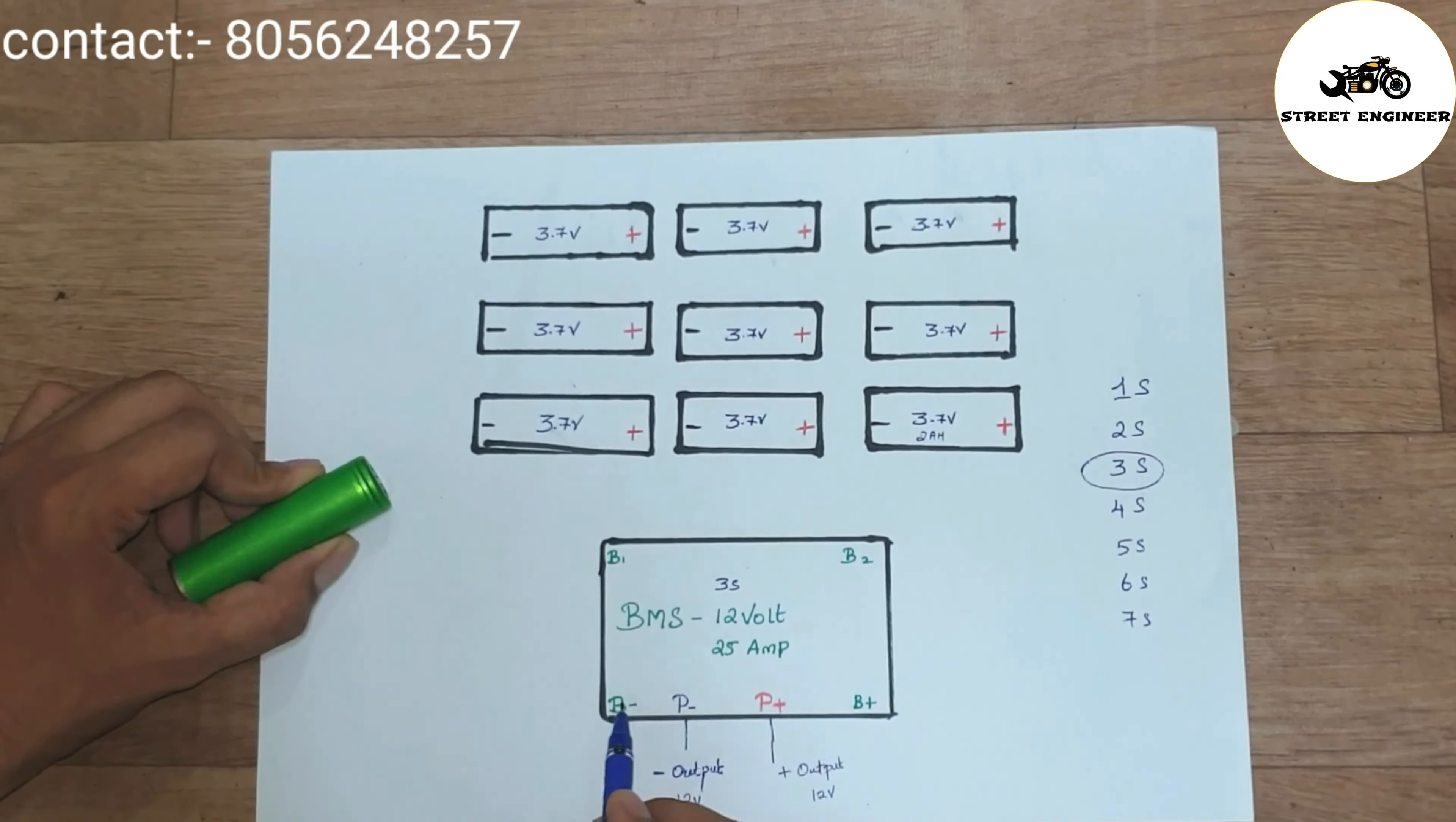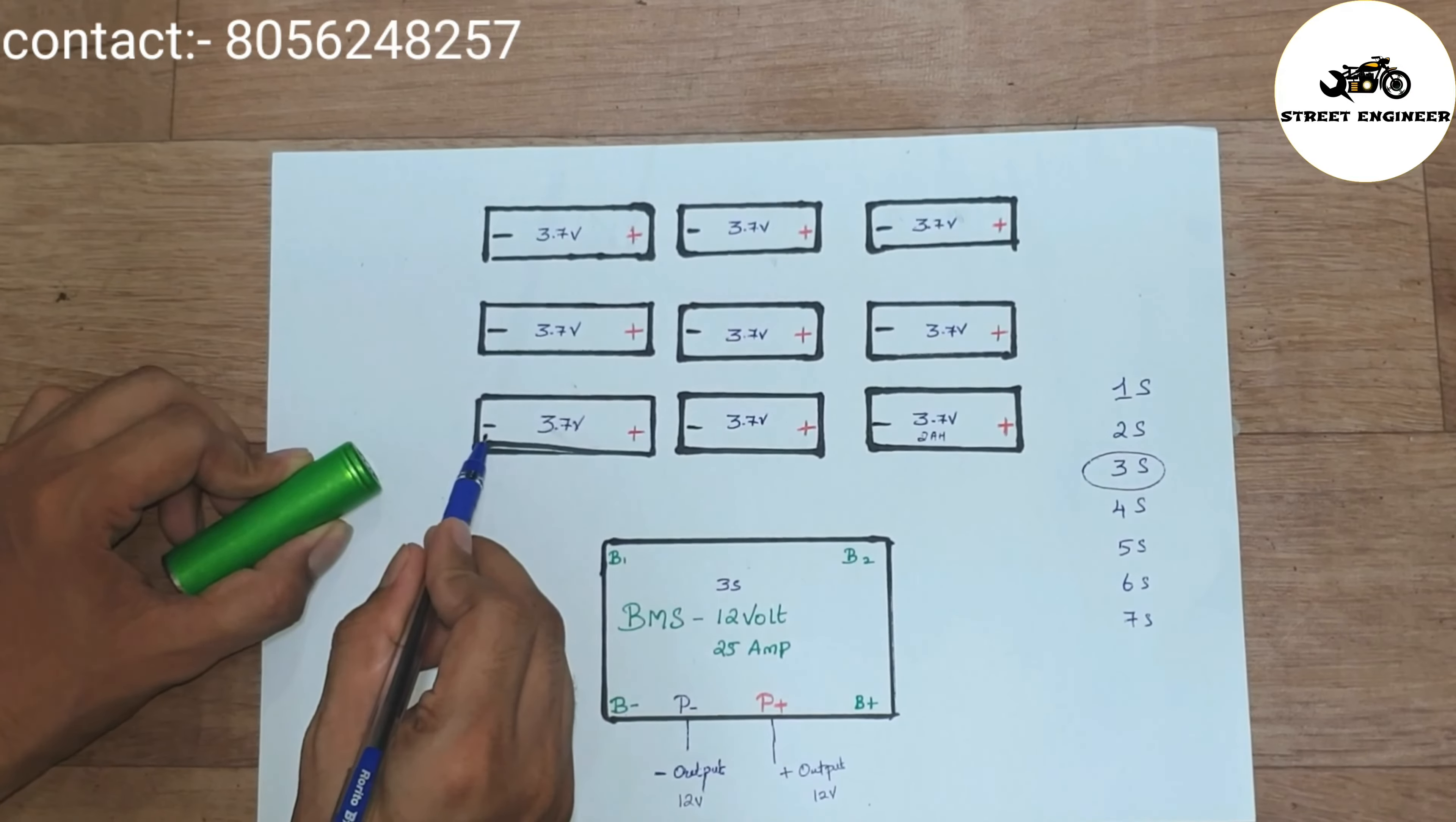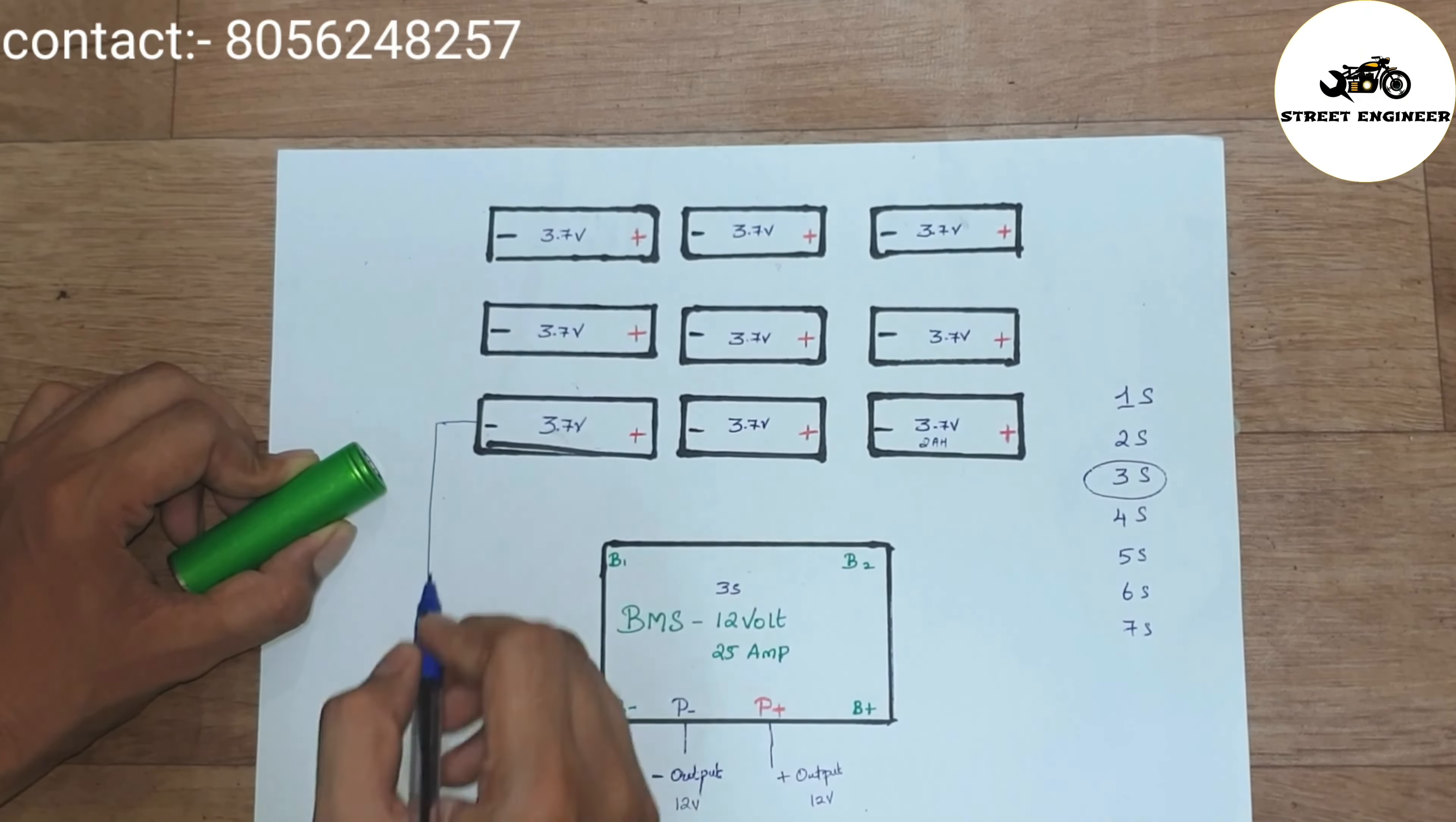Here is the B-, B1, B2 and B+. I will explain how to connect these terminals with cells. Connect this first negative terminal of battery with B- and consider as a B0.